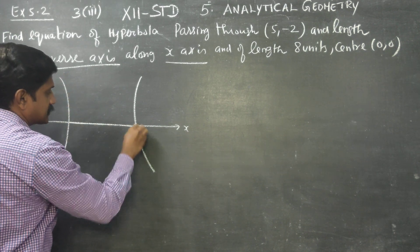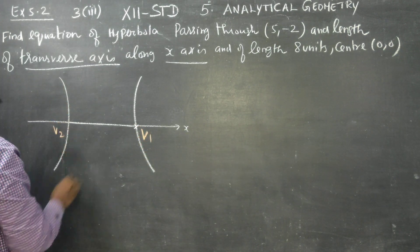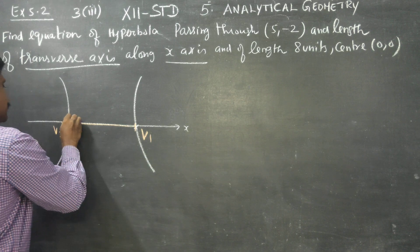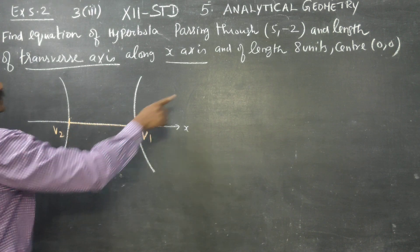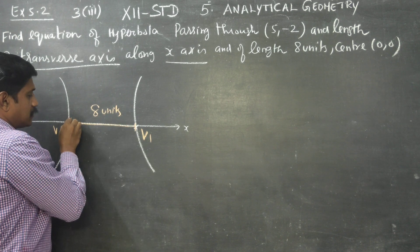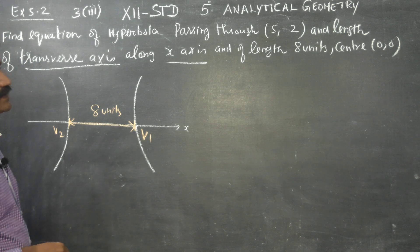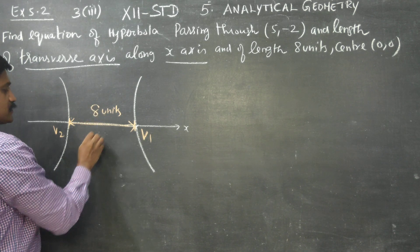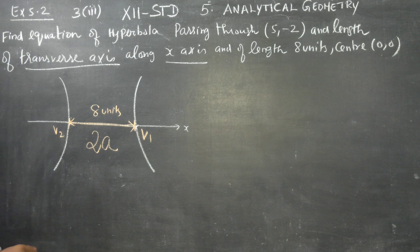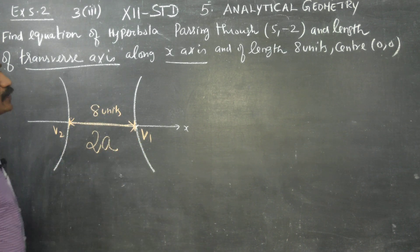The distance between V1 and V2 is called the transverse axis. The length of the transverse axis is called 2a, so the distance between V1 and V2 equals 2a.